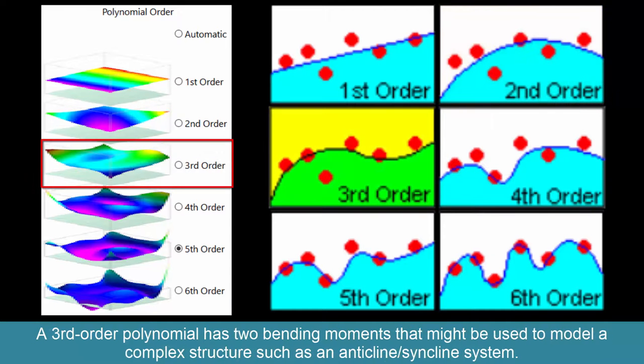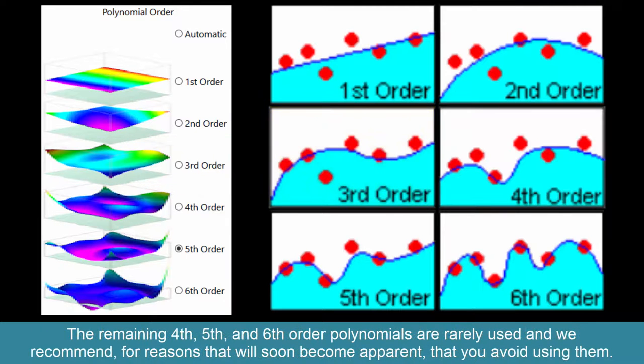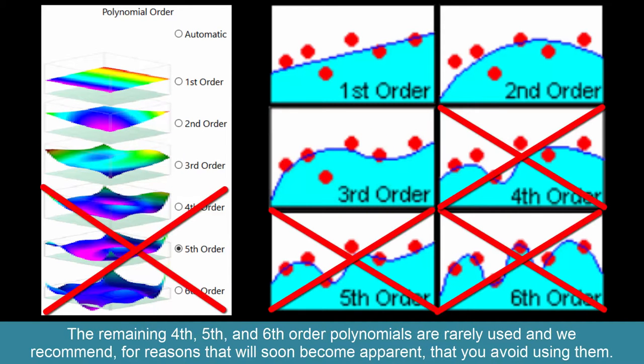A third-order polynomial has two bending moments that might be used to model a complex structure, such as an anticline-syncline system. The remaining fourth, fifth, and sixth-order polynomials are rarely used, and we recommend for reasons that will soon become apparent that you avoid using them.